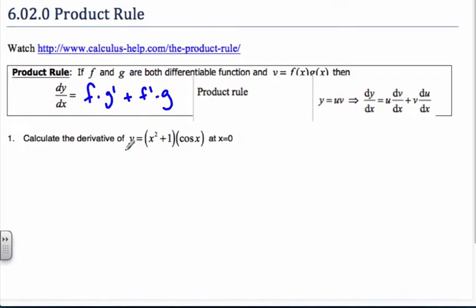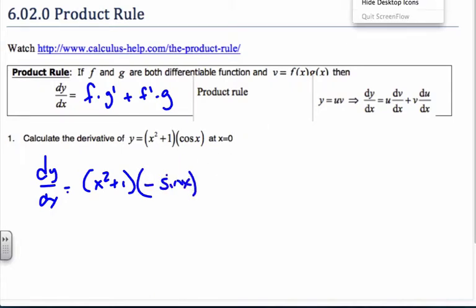Let's do an example. We're going to find the derivative of this product when x equals 0. So dy/dx equals the first function times negative sine x plus the derivative of the first one, 2x, times the second one, cosine x. That is my derivative.